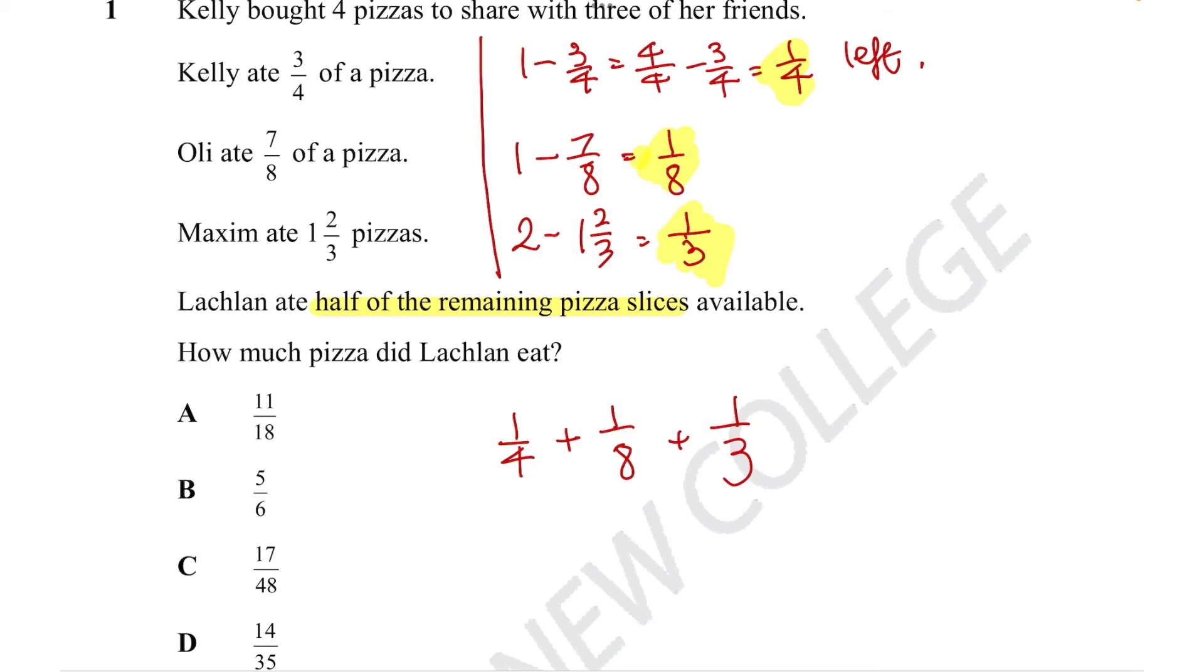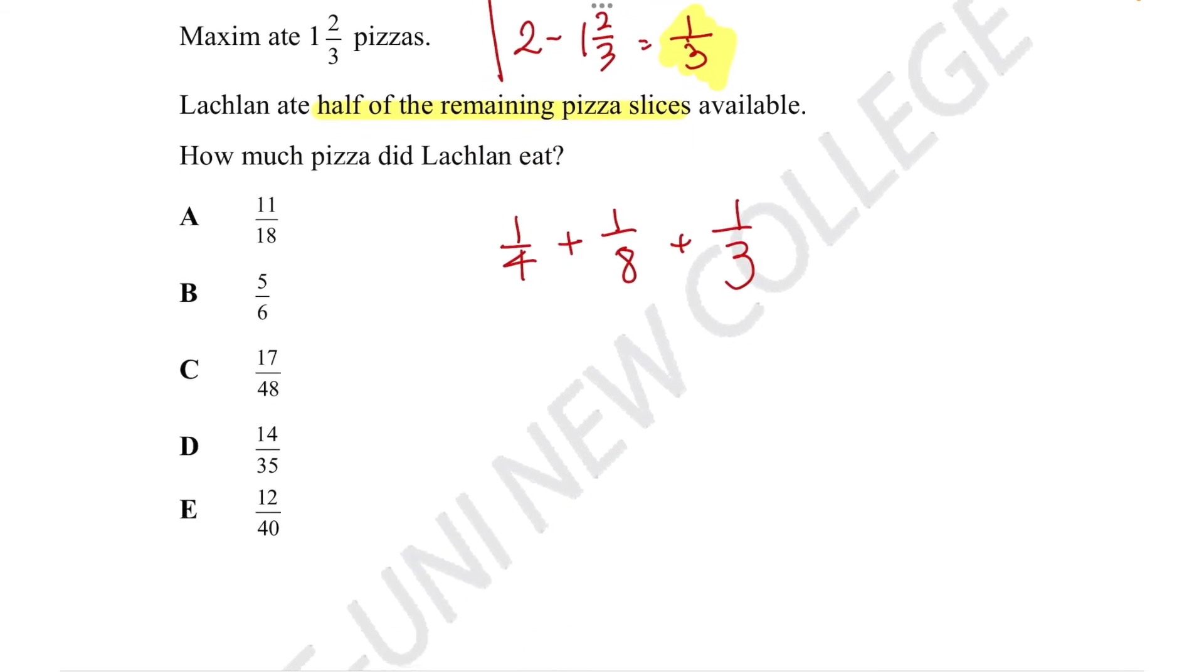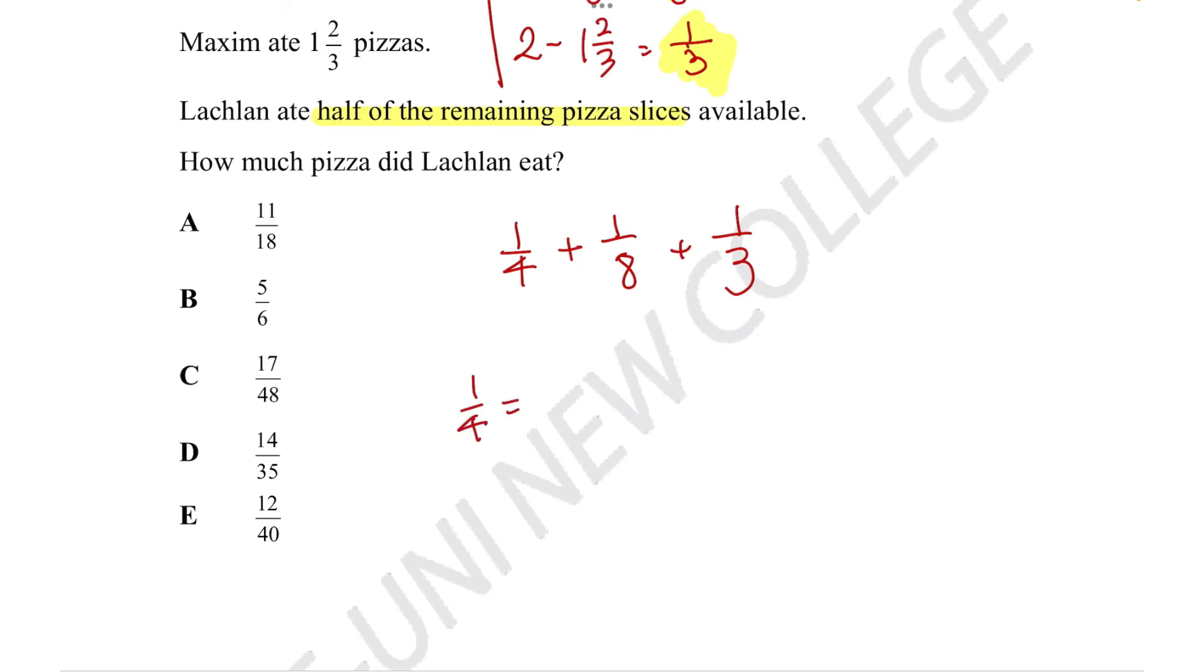The fun part about fractions or the un-fun part, depending on how you see it, is that fractions can be pretty much infinitely converted into equivalent fractions. Because if you just multiply the top number and the bottom number by the same number, you get a fraction that's numerically exactly the same, just written in a different format. So if I multiply both the top and bottom by two, we get two out of eight. And this fraction is identical to this fraction.